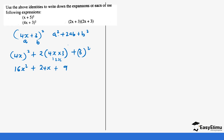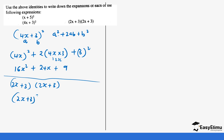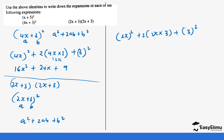For the last one, you have (2x + 3)(2x + 3), which is the same as (2x + 3) squared. Our a is 2x and our b is 3. Using a squared plus 2ab plus b squared: (2x) squared gives 4x squared, plus 2 times 2x times 3 which gives 6x times 2 giving 12x, plus 3 squared which gives 9. The answer is 4x squared plus 12x plus 9.